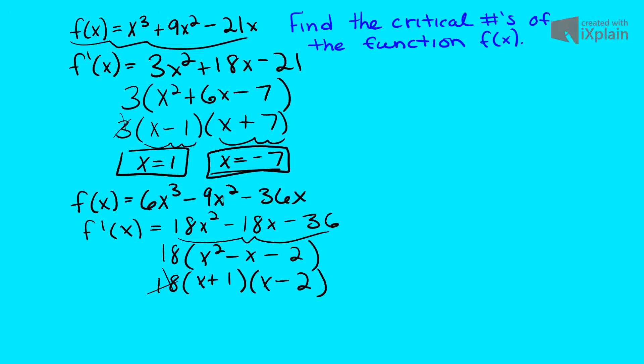Once again, this 18 cancels out, it doesn't have an x value accompanying it, so it's not going to be a critical point. And we get x is equal to negative 1 and x is equal to 2. And that's our answer for that example.